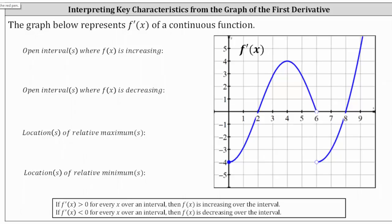Let's first make open points on the graph where the derivative function is equal to 0 or undefined, which would represent the critical numbers. Notice the derivative is 0 at x equals 2, the derivative is undefined at x equals 6, and the derivative is 0 at x equals 8.